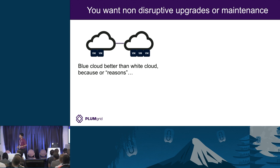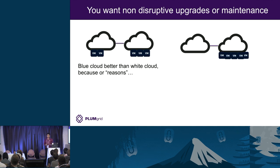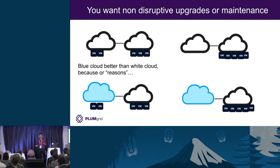Maybe you want to do non-disruptive upgrades. Instead of making one big cloud, you made your deployment as two smaller clouds connected to each other. When your favorite CMS releases a new version and you want to upgrade, it's pretty easy. All you have to do is migrate your workloads from one cloud to the other, upgrade the cloud which doesn't have any workload to the new software, and then migrate your VMs back. There you go — you've got a cloud running new software and you're happy.